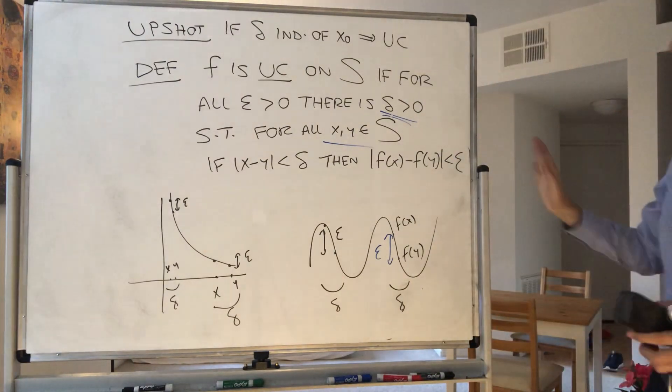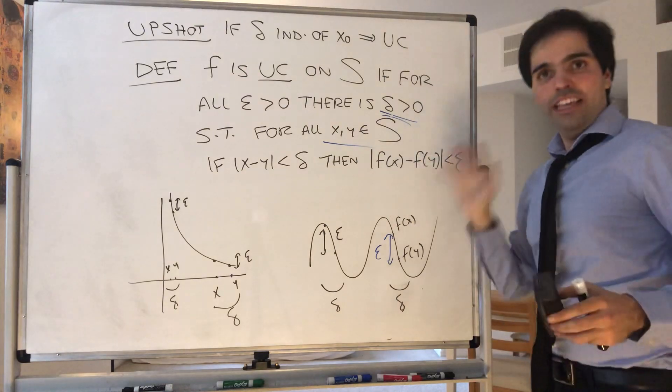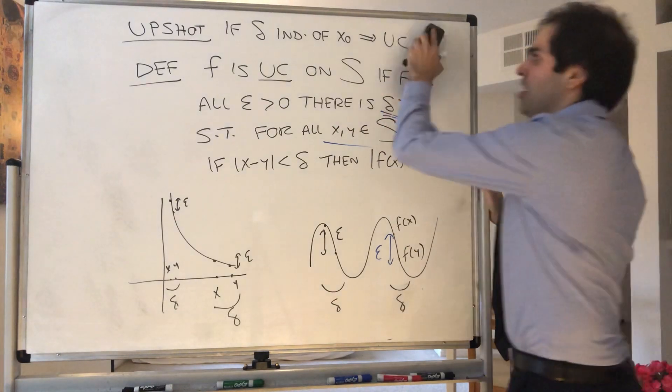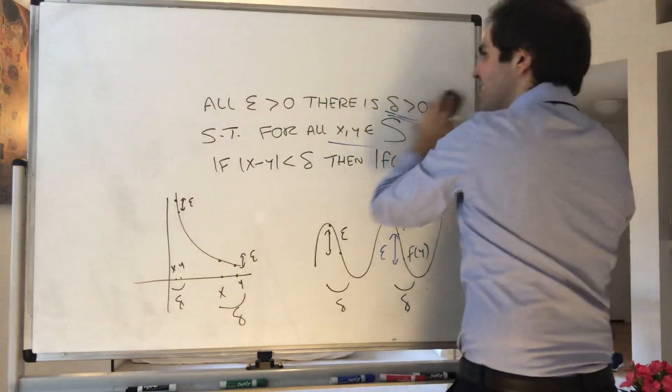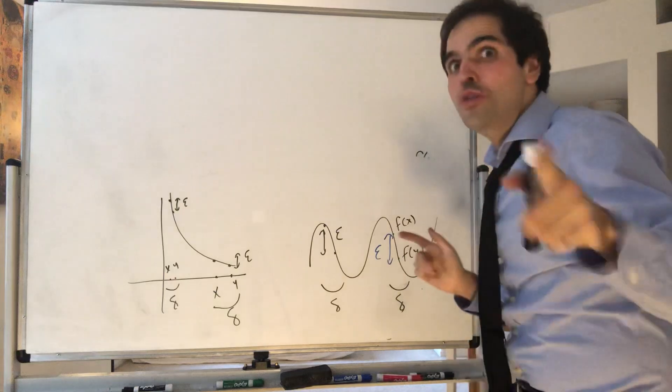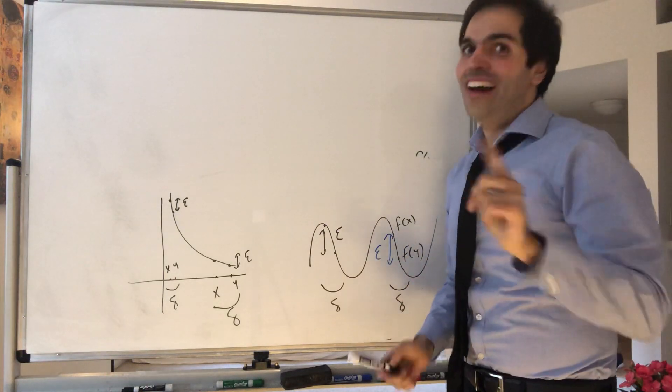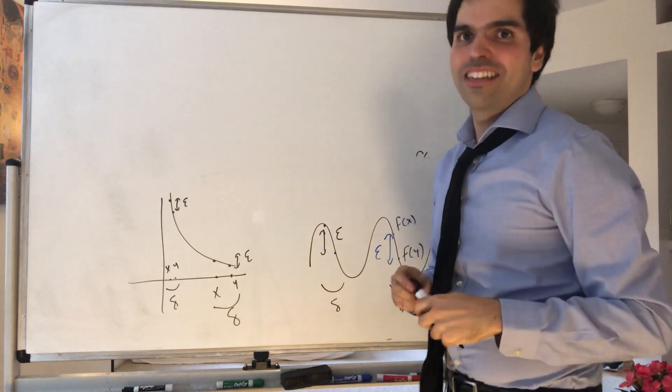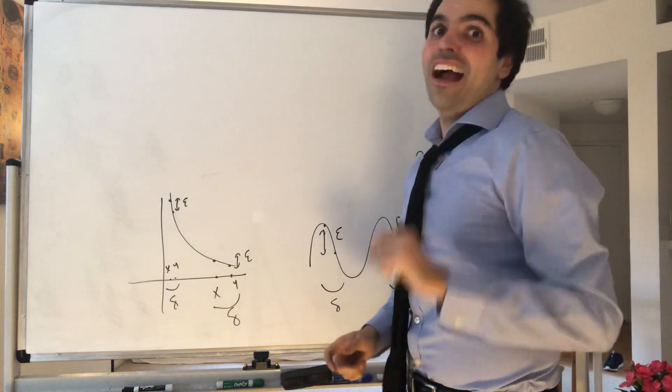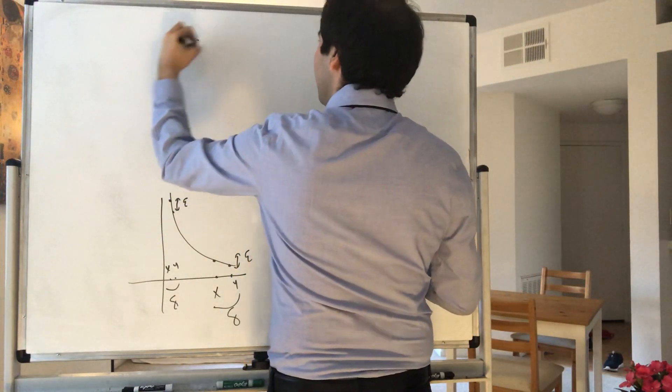And to finish, just two remarks. So, very important: if delta is independent of x naught, then it's uniformly continuous. But just because you found that delta depends on x naught does not mean that it's uniformly continuous, because there could be a smarter person than you to actually found something that's independent of x naught.